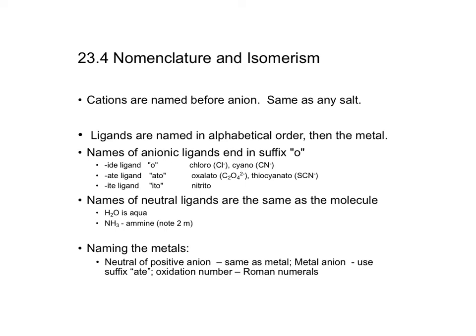Please make sure you've gone through the first sections of this chapter because we're going to learn how to name and how to look at isomers. Cations are named before the anion. Everyone knows this is called sodium chloride. It's the same for any salt.